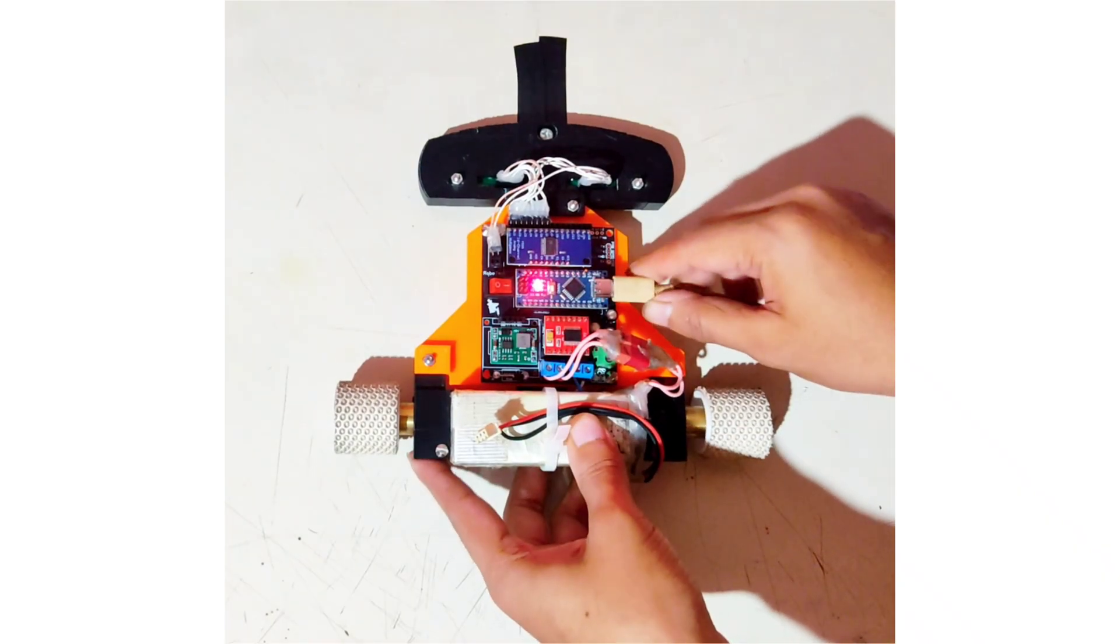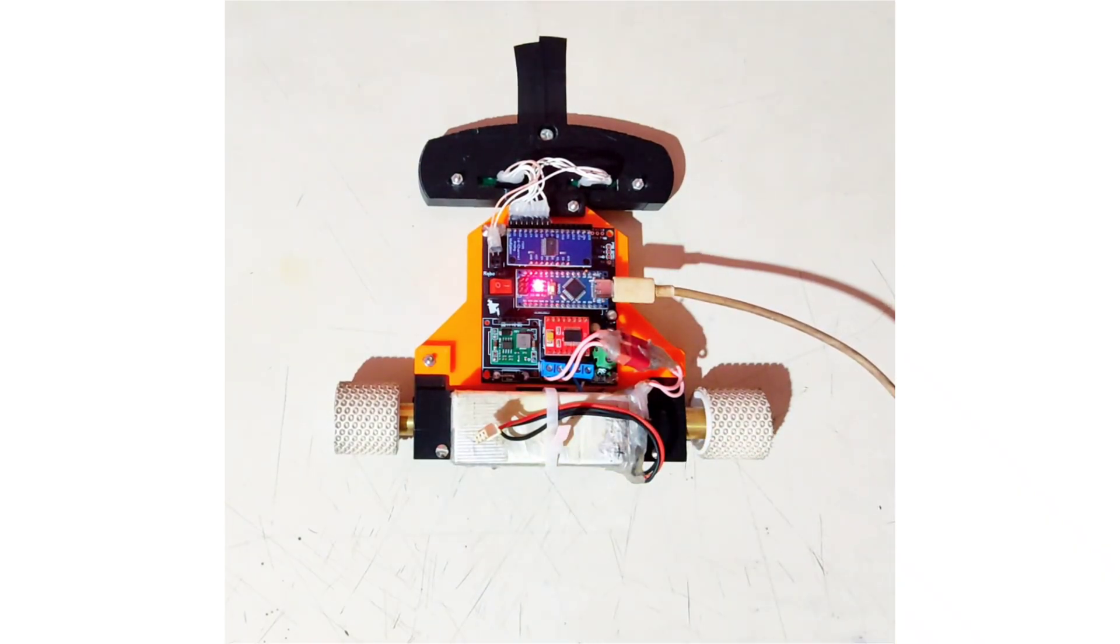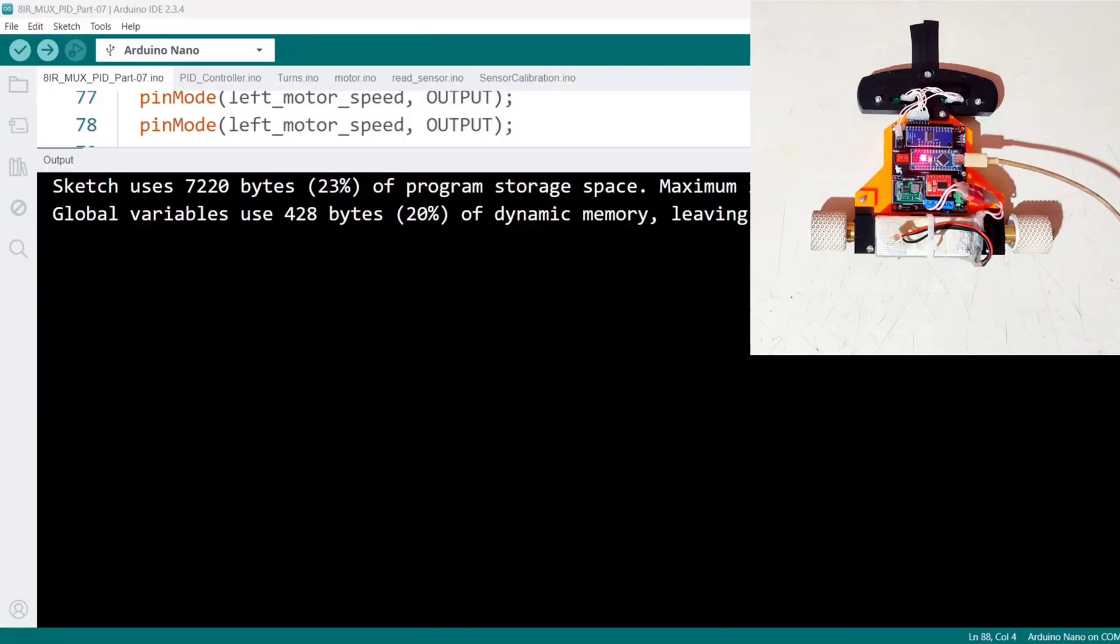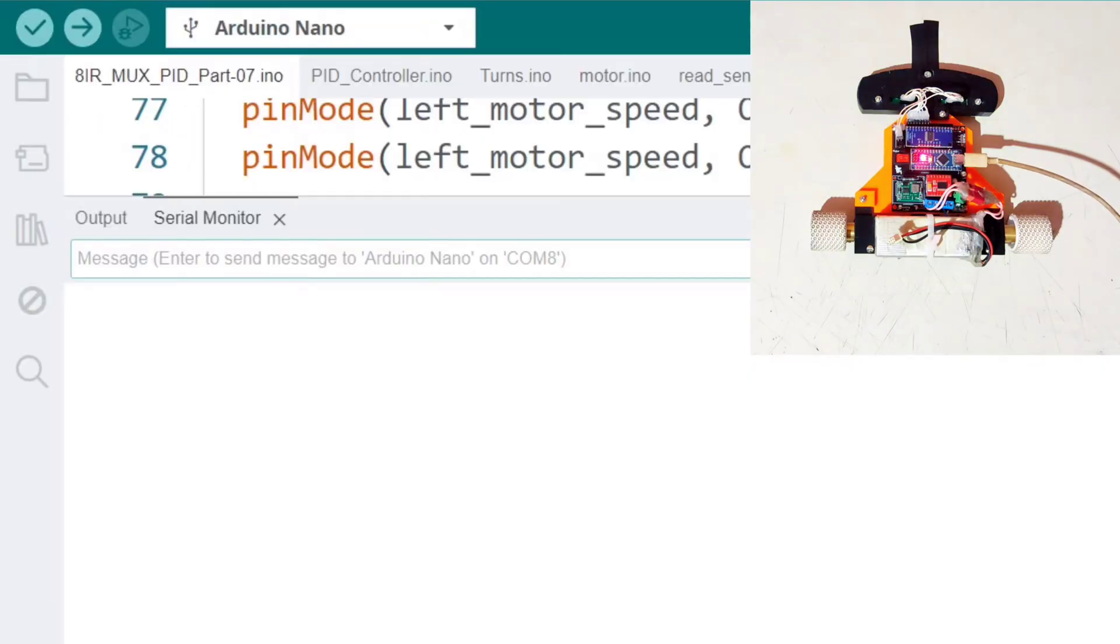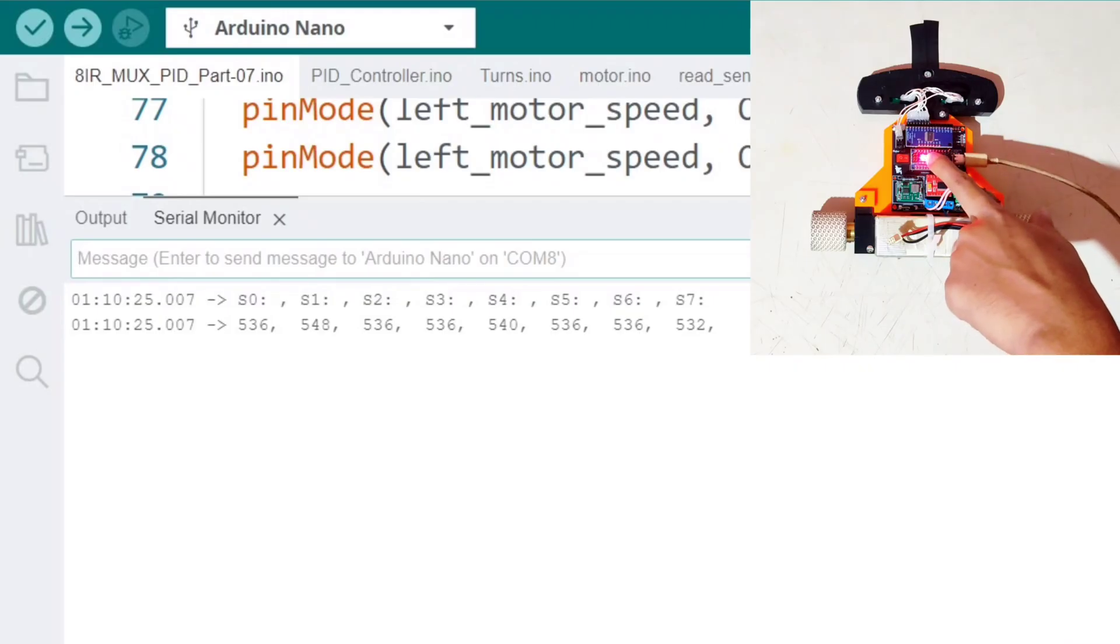Then, I connect the USB cable to check the calibrated reference values for each sensor in the serial monitor. As you can see, when I reset the Arduino, the calibrated reference values appear in the serial monitor.